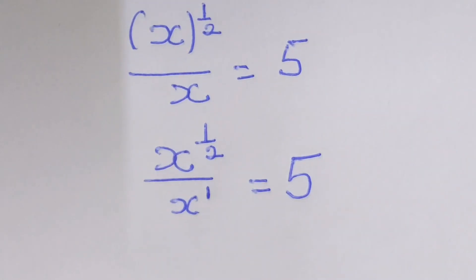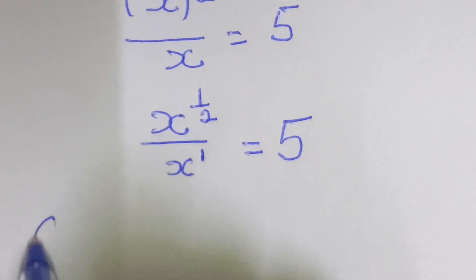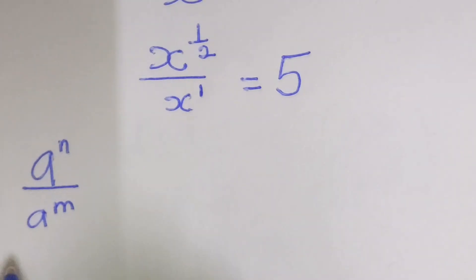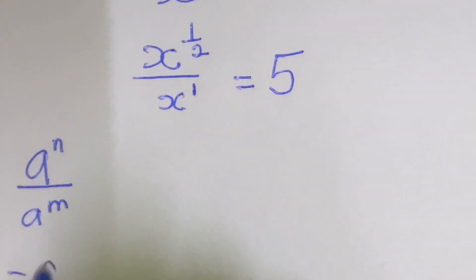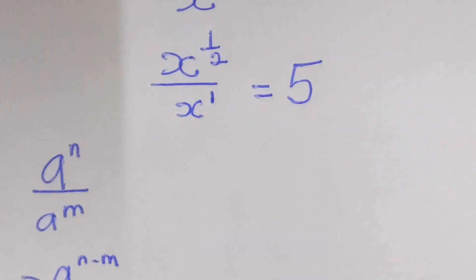And by using law of indices which says that a power n over a power m, once you have same base, this is equal to a power n minus m, and this is what we're going to apply here.